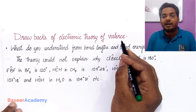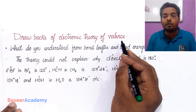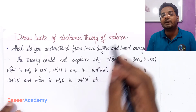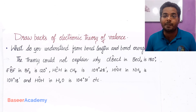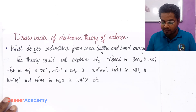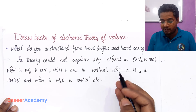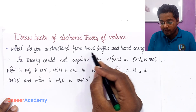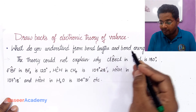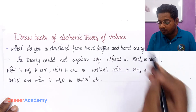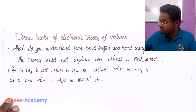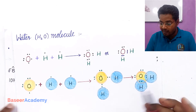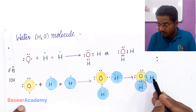Electronic theory of valence has two drawbacks. Drawbacks are things that electronic theory of valence could not explain. The first thing it could not explain is why the bond length and bond energies are different when the atoms involved in covalent bonding are different.